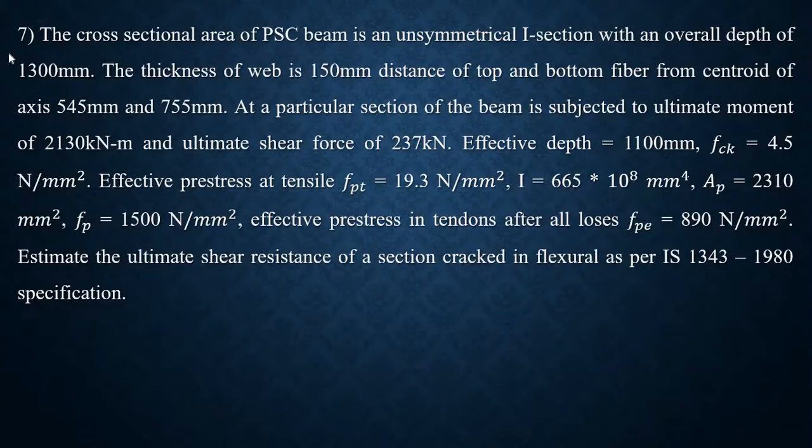Hello everyone, welcome back. Today I am going to explain a problem on design for shear. A cross sectional area of PSC beam is an unsymmetrical I-section with an overall depth of 1300 mm. The thickness of web is 150 mm. Distance of top and bottom fiber from centroid of axis is 545 mm and 755 mm. At a particular section of the beam is subjected to ultimate moment of 2130 kN-m and ultimate shear force of 237 kN.